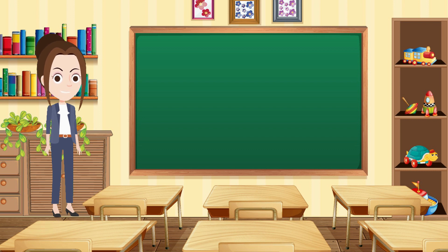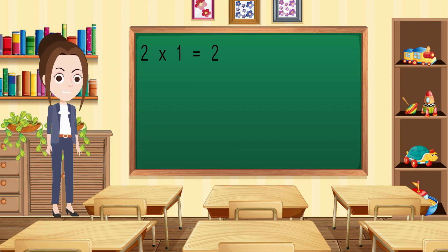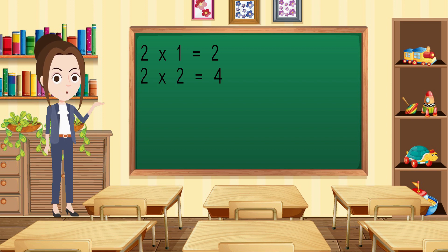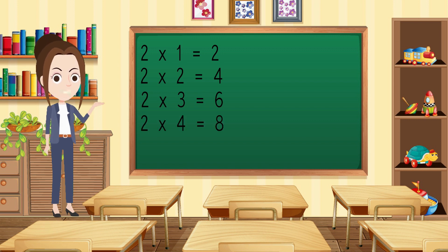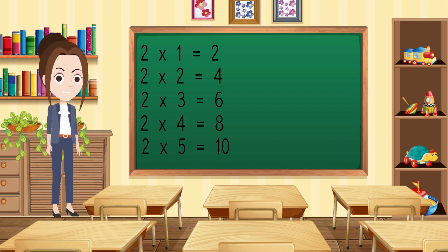2 1s are 2, 2 2s are 4, 2 3s are 6, 2 4s are 8, 2 5s are 10,